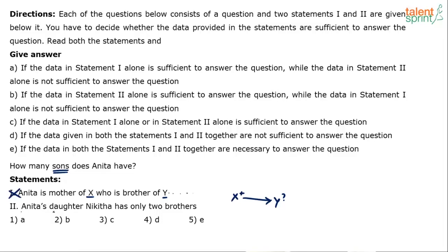Ok. Statement 2: Anita's daughter Nikita has only two brothers. Very clear. Anita's daughter Nikita. Anita has a daughter whose name is Nikita. Nikita has only two brothers.